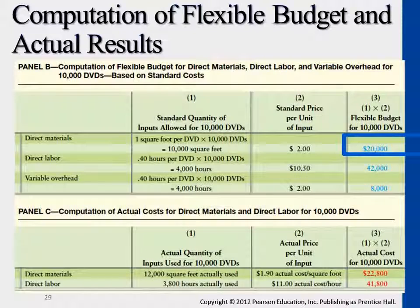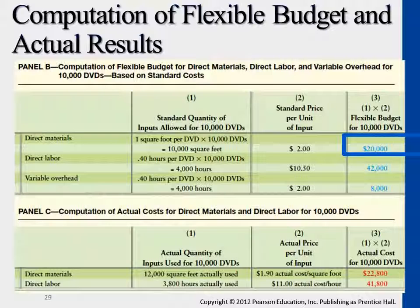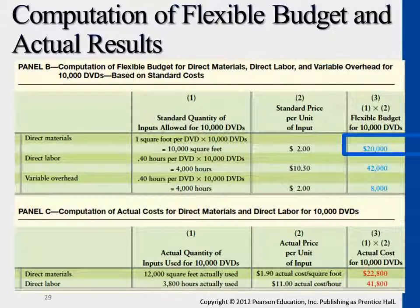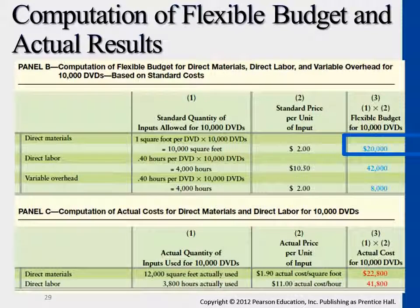But what did we see in the bottom table? We had 12,000 square feet actually spent, which is not the same as what we expected. In the standard production cycle, we expected to spend only 10,000 square feet — so we have an additional 2,000 square feet. What about cost? We actually paid only $1.90 per square foot. But overall, if we multiply these two, we still spent $22,800, meaning the total cost is more than what we expected for direct materials.